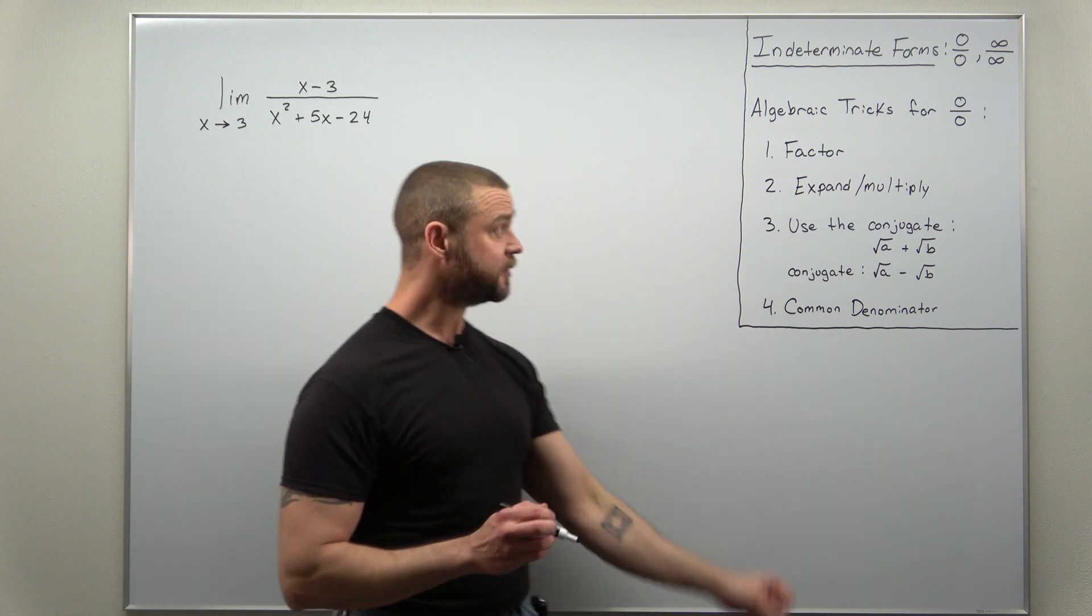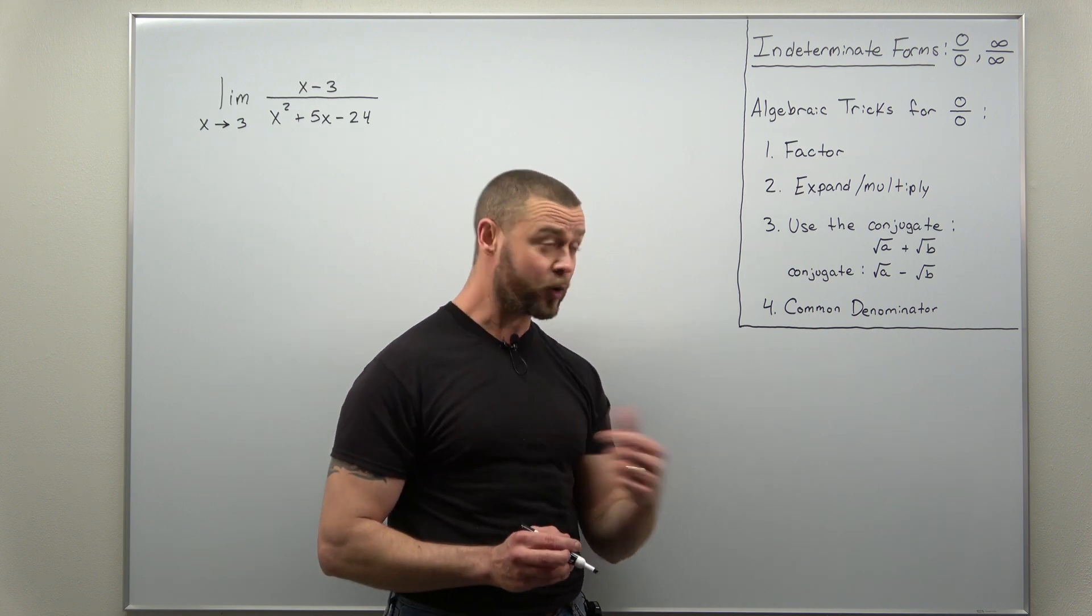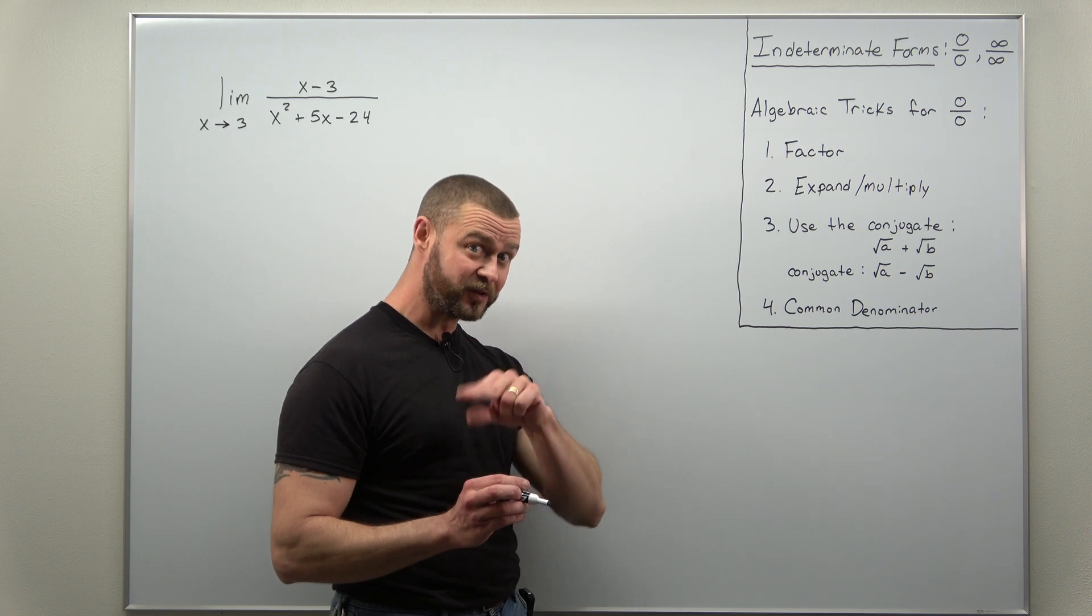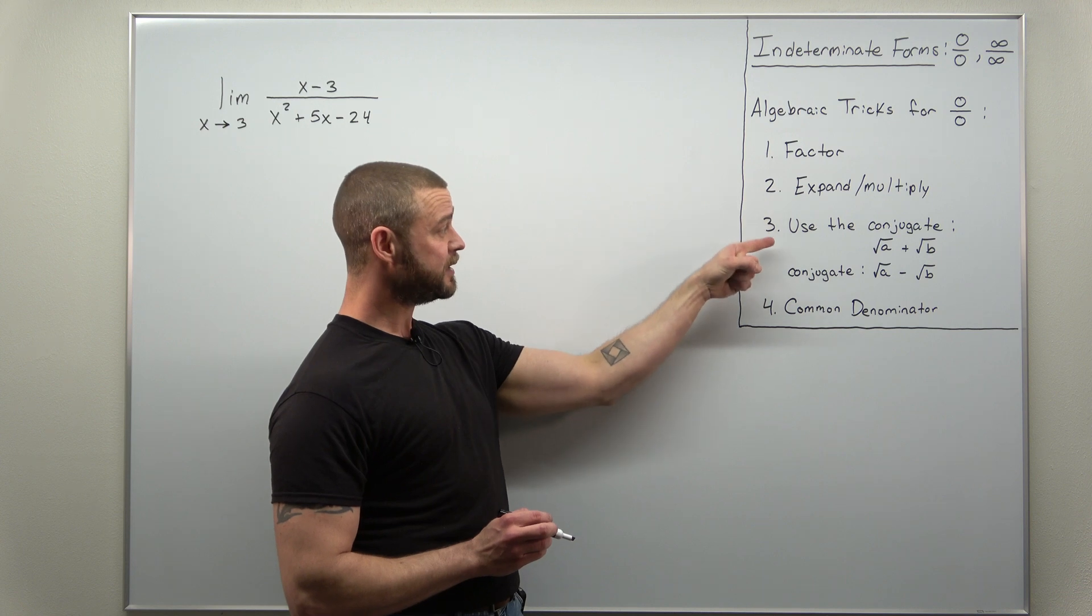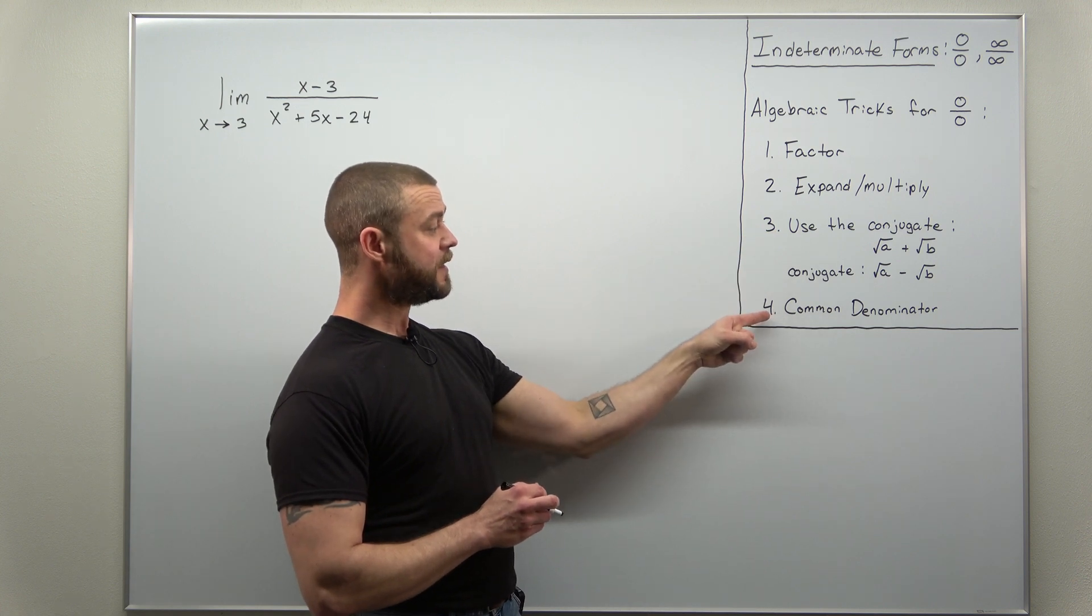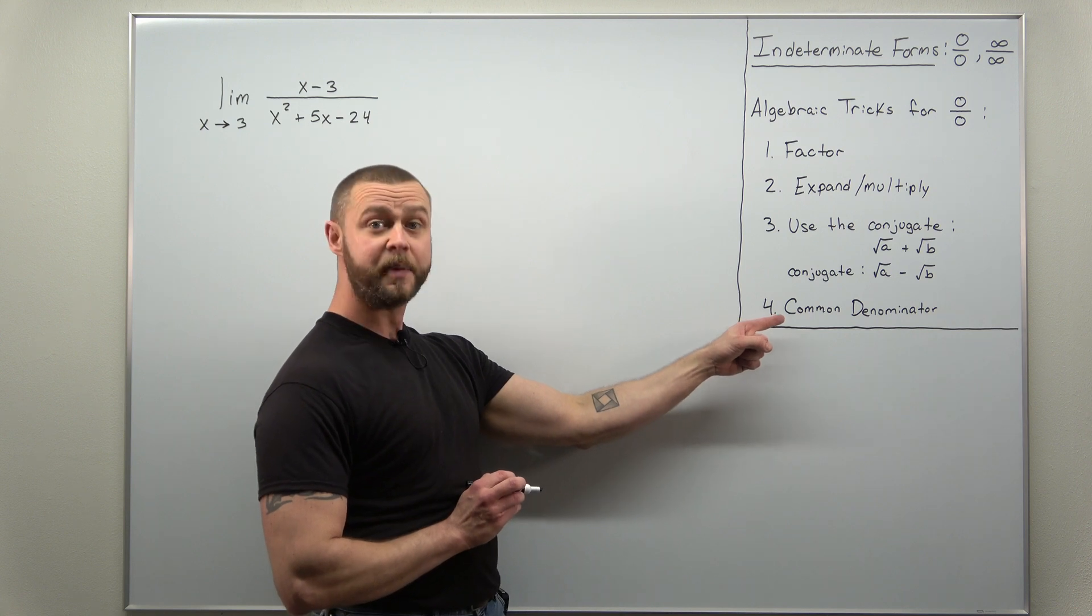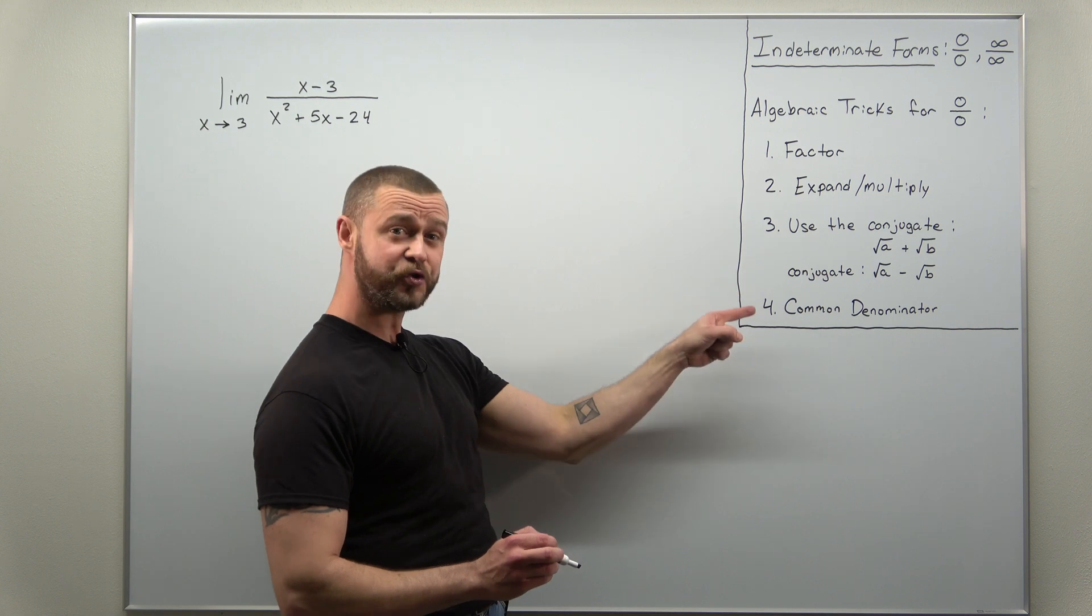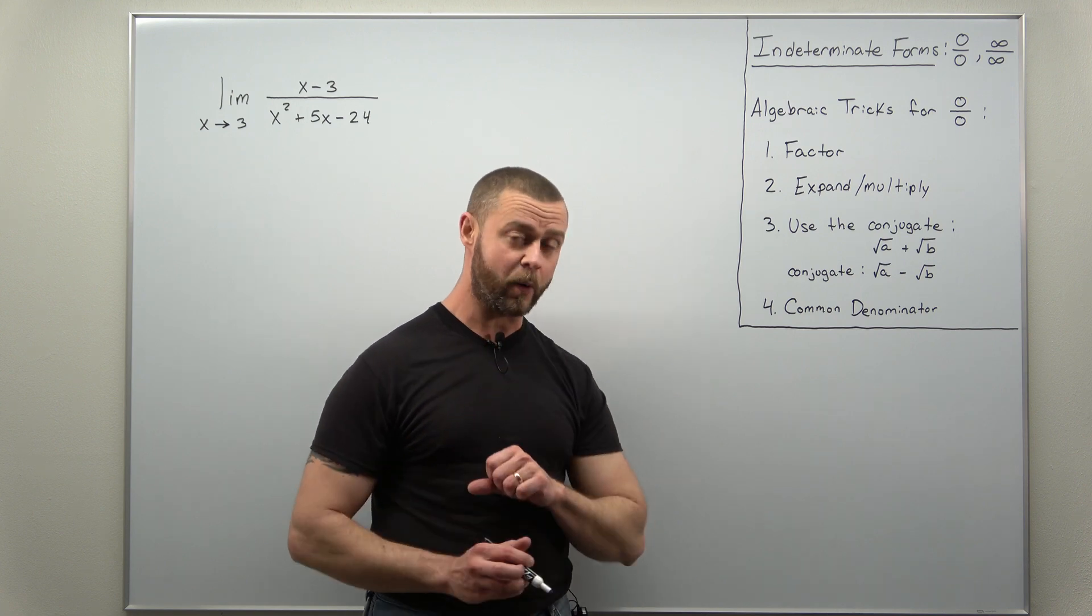Now fortunately there's four standard simple algebraic tricks we use to eliminate the indeterminate form for the type zero over zero. For those limits with indeterminate forms of type zero over zero you can factor, expand, or multiply. If you have square roots you can multiply and divide by the conjugate of the radical, and then if you have fractions within fractions anywhere in your limit try combining the fractions using a common denominator. And for the most part these four tricks will get you through most limits with indeterminate forms early on in your calc one course.